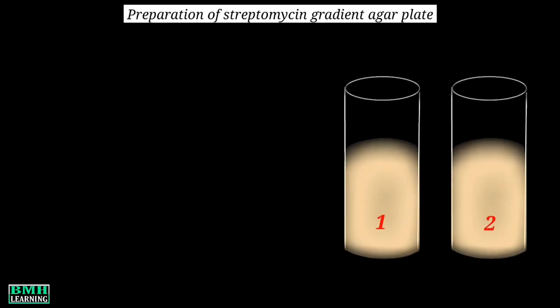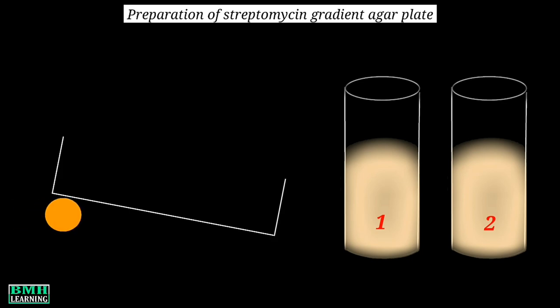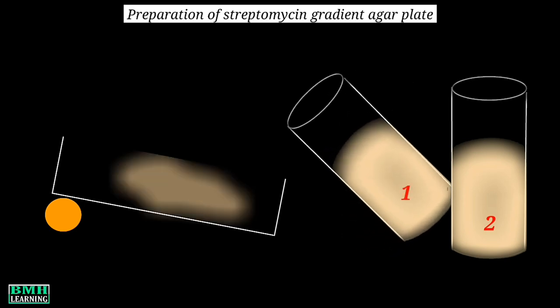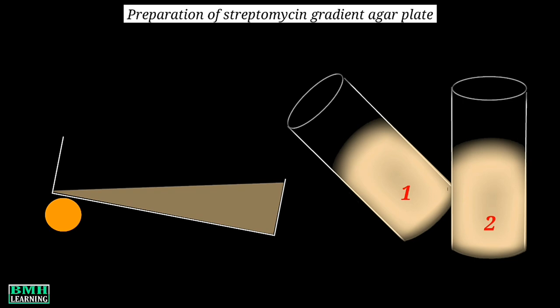Two tubes containing agar are melted in a hot water bath, which are then allowed to cool. A sterile Petri dish is brought, and under one end of this plate a pencil is placed. The pencil causes the plate to be lifted from one end. Sufficient amount of the molten agar is then poured onto the Petri plate, and the agar is allowed to solidify in the slanted position.